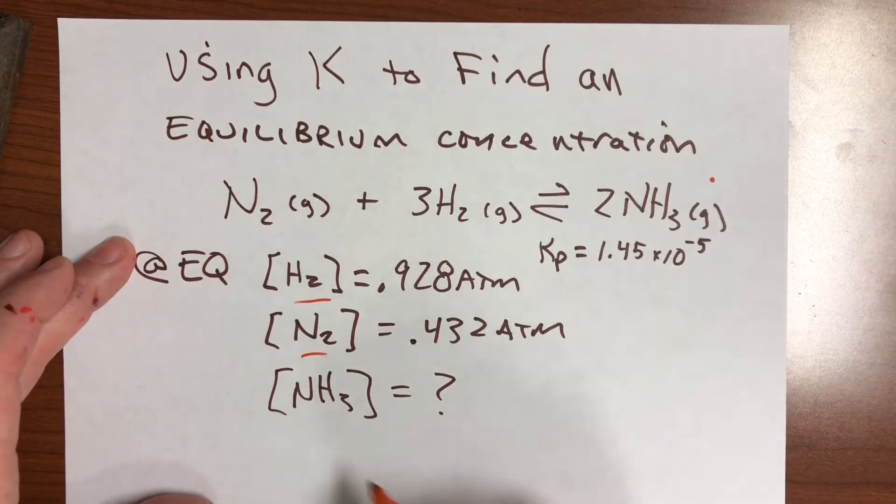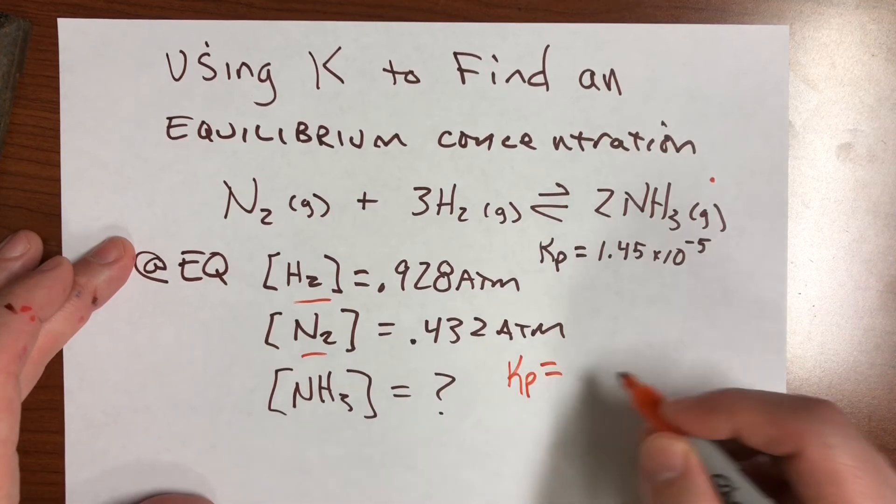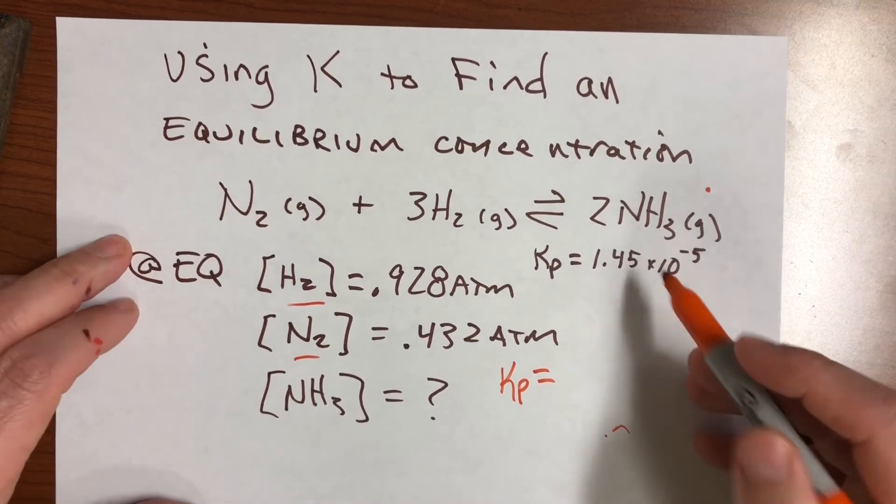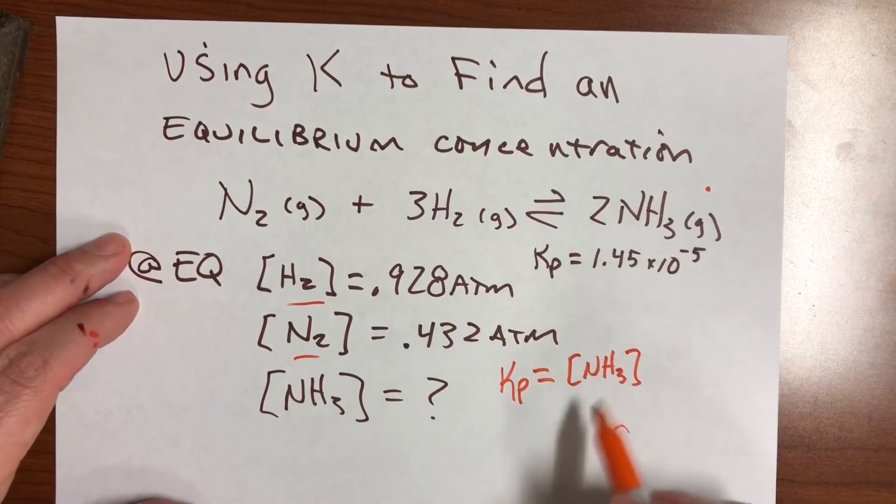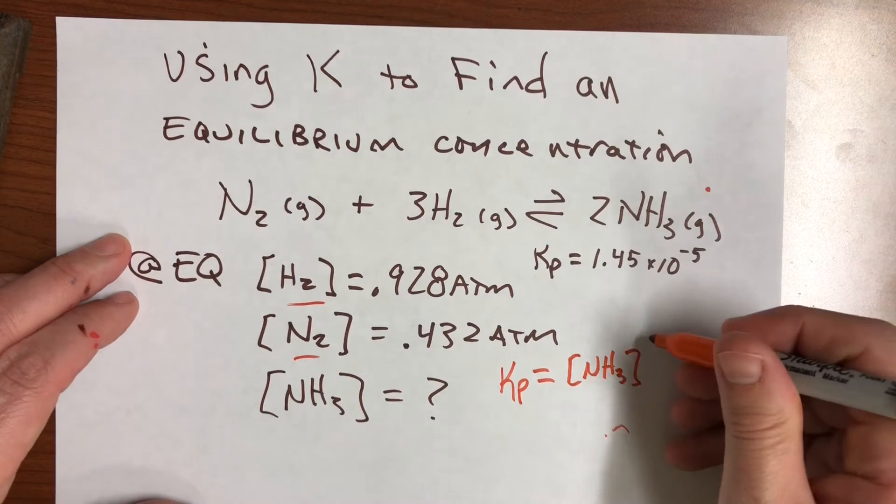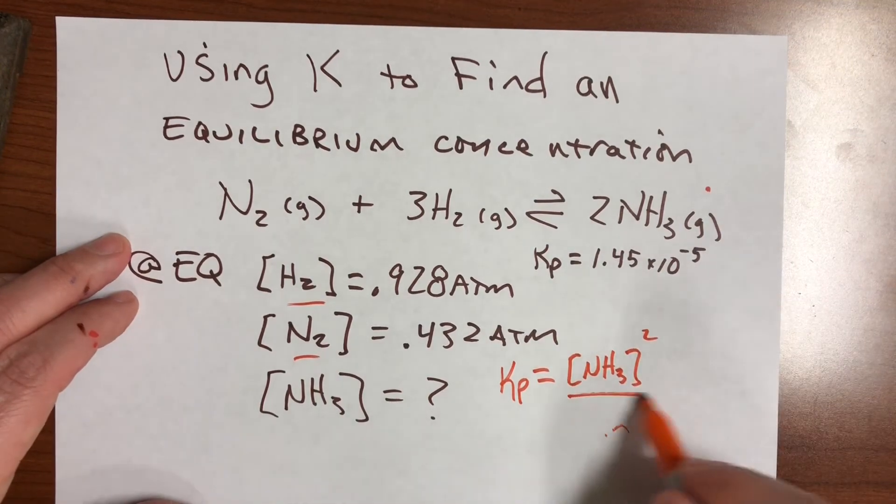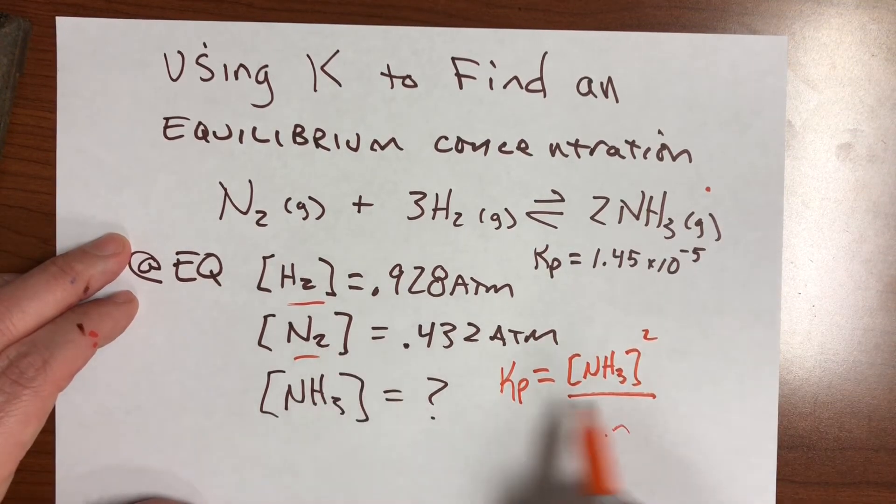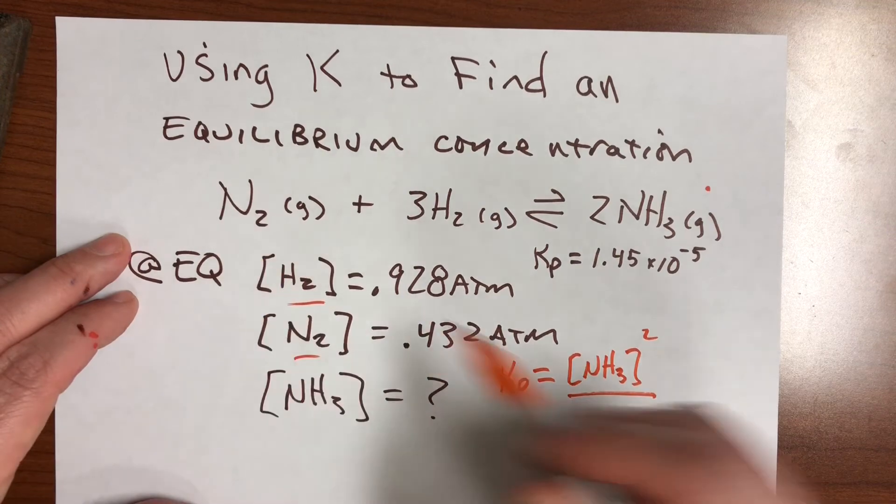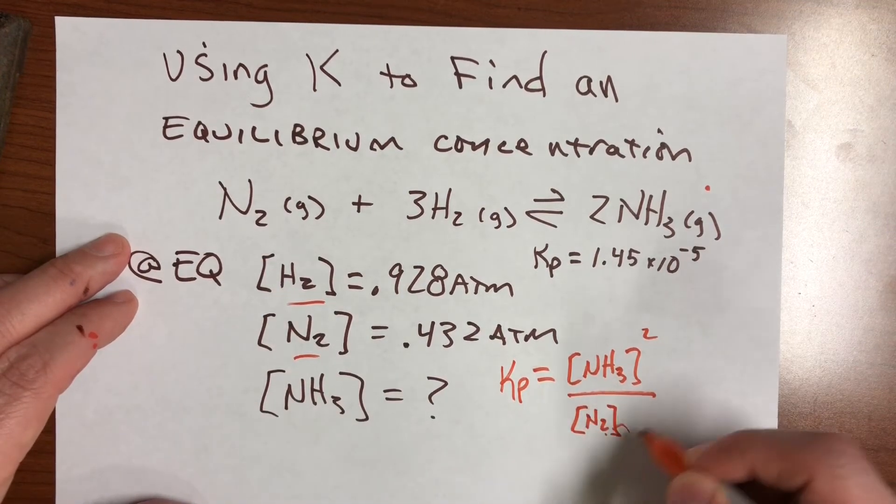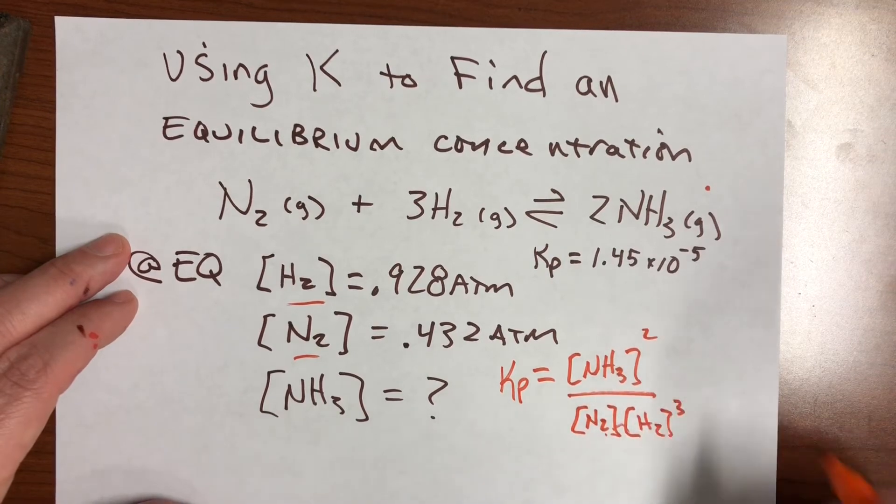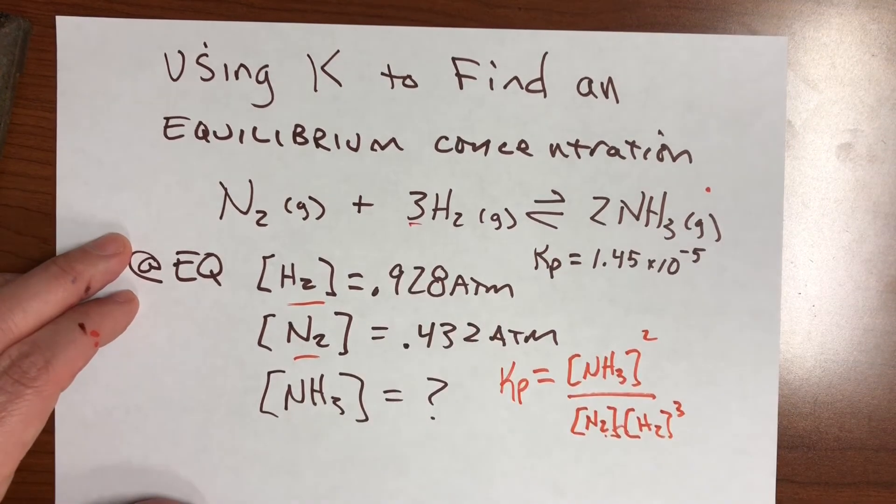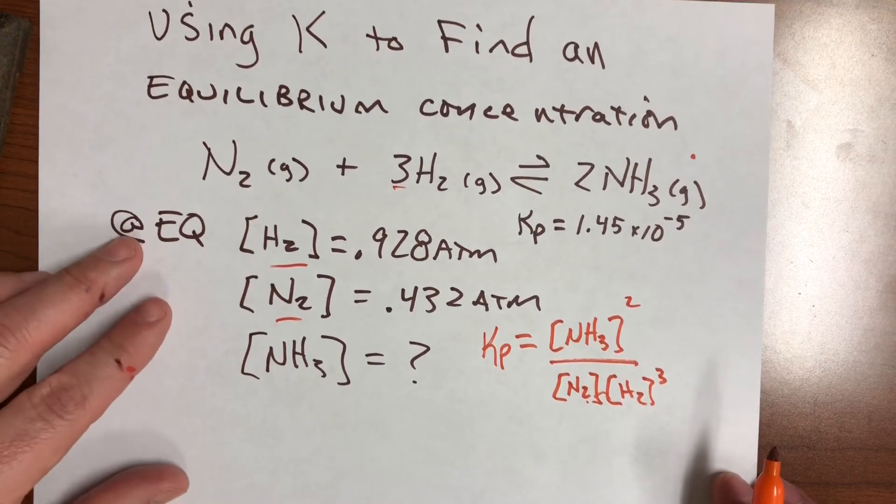So we're going to start out by writing the K expression. So Kp for this reaction is going to be the product NH3—technically, you really only use brackets for molarities, but I use them for everything—over the nitrogen, which is not raised to any power, and over the hydrogen, which is raised to the third power because of that. And so there's your expression.